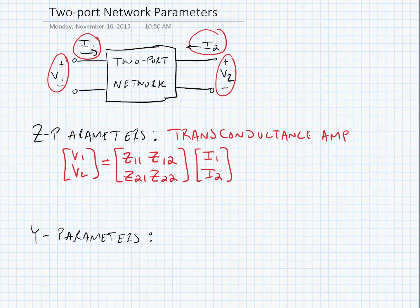If we want to solve for any one of the parameters, we need to isolate the appropriate input parameter in order to do so. For instance, if we wanted to find Z11, we would say that it equals V1 over I1 when I2 is equal to 0.